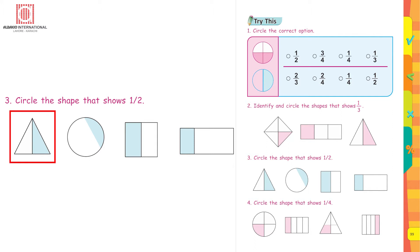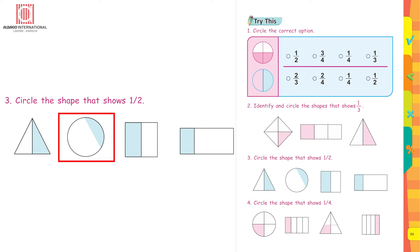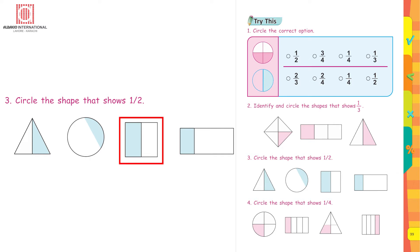Circle the shape that shows one upon two. The first picture is divided into two equal parts — yes, the parts are equal in size. The second picture is a circle divided into two parts, but the parts are not equal in size, so cross it out. The next picture is divided into two equal parts — yes, circle it.